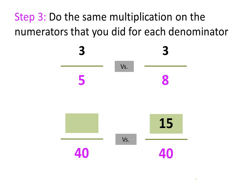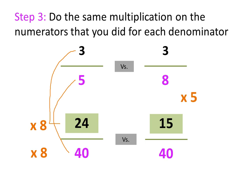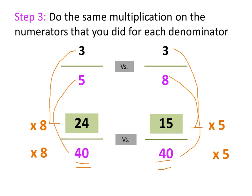How did that happen? Step 3: do the same multiplication on the numerators that you did for each denominator. To get the 5 to become the 40, I multiplied by 8. So I have to do the same thing for its numerator — multiply by 8 to get the new numerator: 24. For the 8 to turn into the 40, a multiplication times 5 had to happen. So 3 times 5 gives me the 15. Now we're speaking that same denominator language.